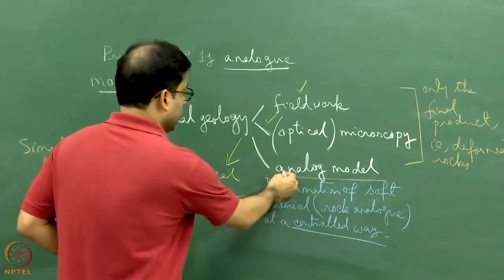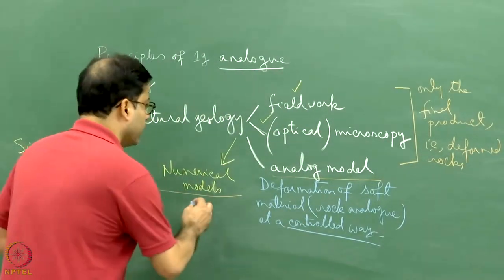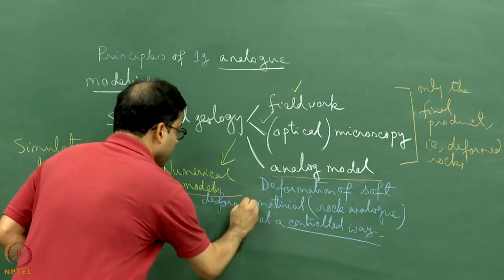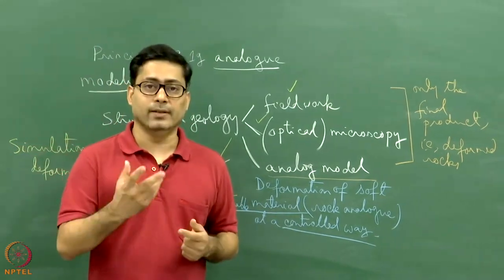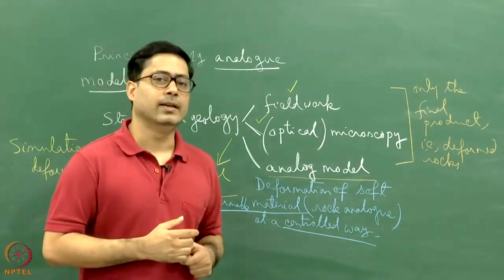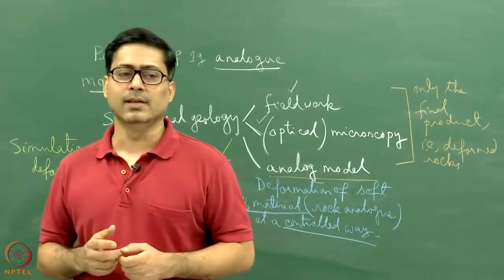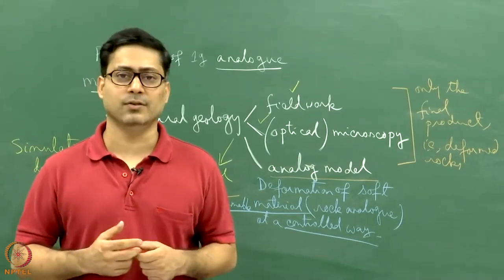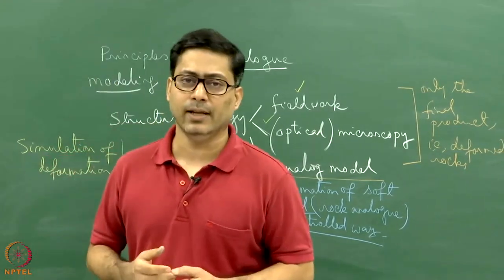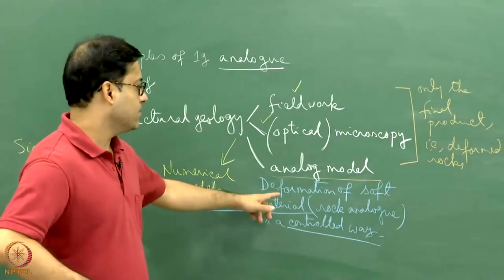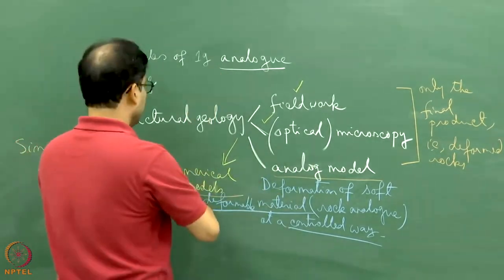Analog model materials can be various — any soft deformable material. This can be clay, even Cadbury chocolates, peach, bouncing putty, silicon putty, or polydimethylsiloxane — in short PDMS — which is an organic compound with a long chain of carbon and hydrogen that is soft and deformable, suitable for laboratory use. You can also experiment with new soft deformable materials. The kind of analog model I am talking about today is all about ductile deformation.